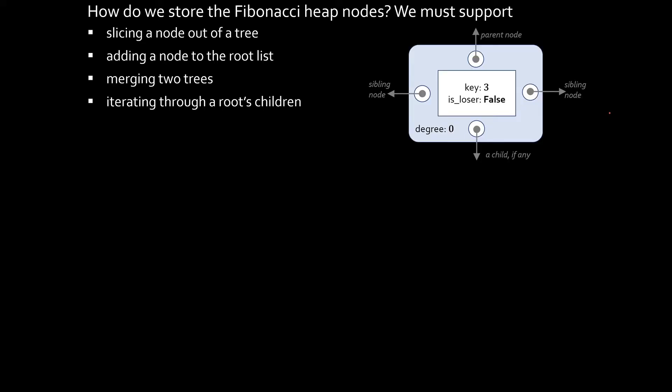Here's a simple data structure that would work. We could say, let each node have pointers, both a pointer to a parent and to a child, let it point to a left sibling and a right sibling. I won't go through all the details of the operations, but it's fairly easy to see that all of these can be done in O of one time, except of course iterating through a node's children, which is O of number of children.